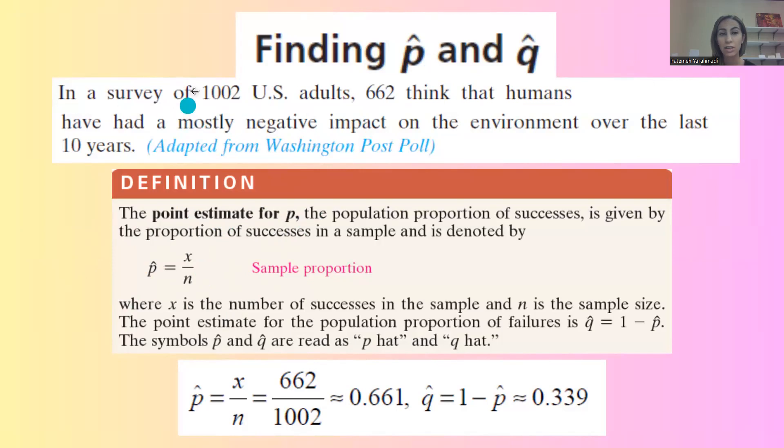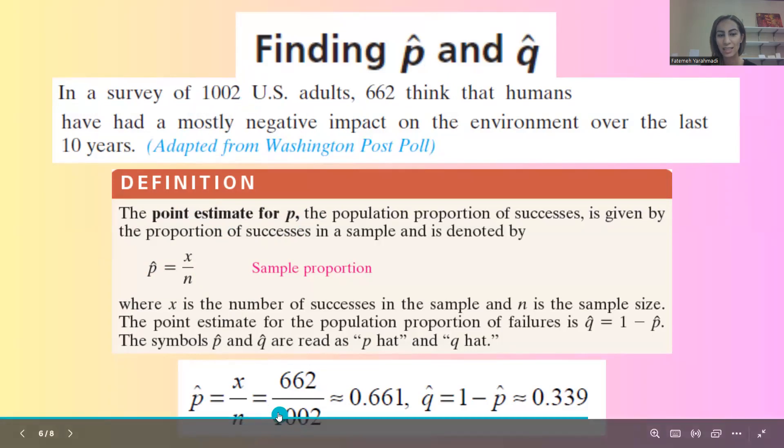Since you have a survey of 1,002 U.S. adults, it means that you surveyed 1,002 people. So the sample size is 1,002. So N is equal to 1,002.